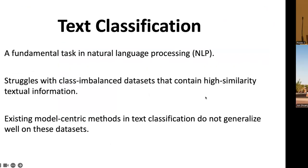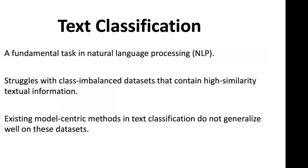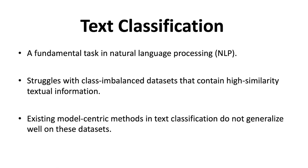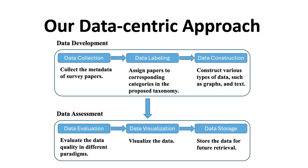Text classification is a fundamental task in natural language processing. However, the performance in this task may sometimes struggle with class-imbalanced datasets that contain high similarity textual information. Existing model-centric methods do not generalize well on these datasets. In this work, we aim to address the above challenges in text classification, and we propose a data-centric approach to address these issues.